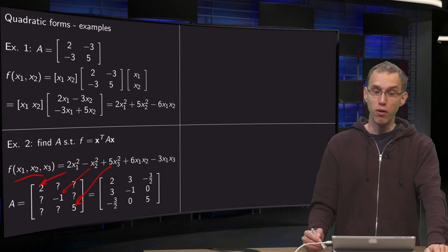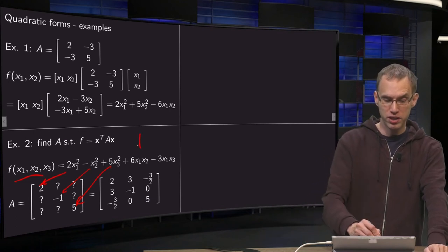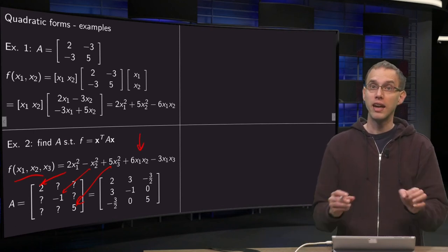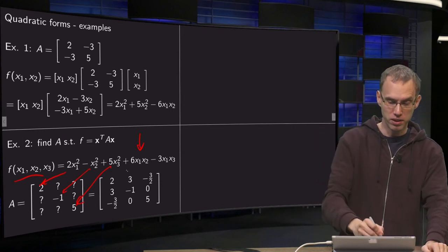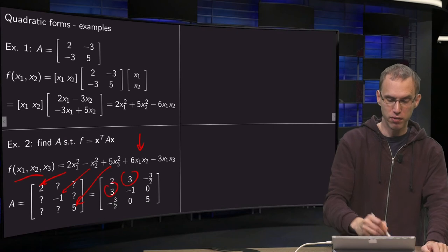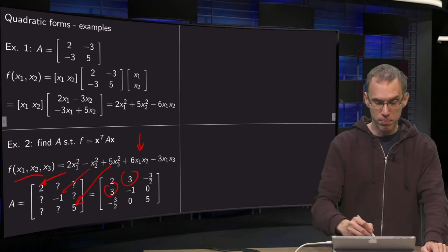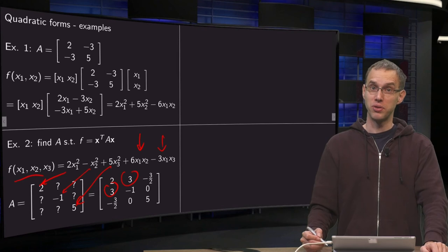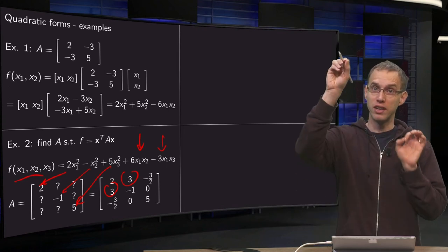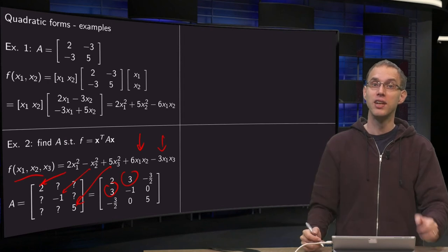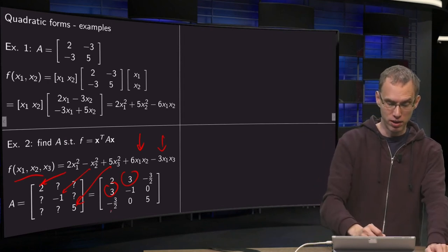What do we have as off-diagonal elements? We have a 6x1x2 that has to be shared between the 1,2 and 2,1 places, so they both get a 3. We have a minus 3x1 times x3. This minus 3 has to be shared between the 1,3 and 3,1 places, so both get a minus 3 over 2.